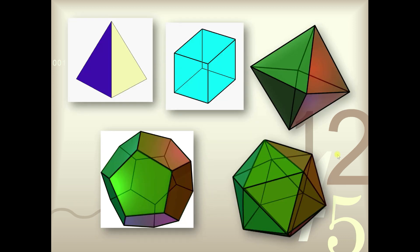So these are the only regular polyhedra in existence — the five famous platonic solids: the tetrahedron, hexahedron, octahedron, dodecahedron, and the icosahedron.